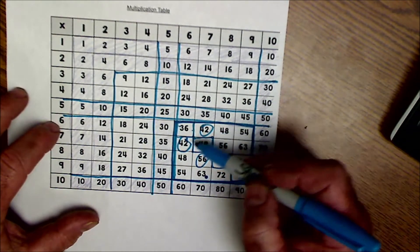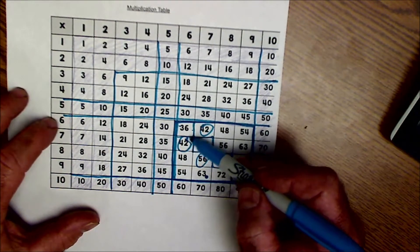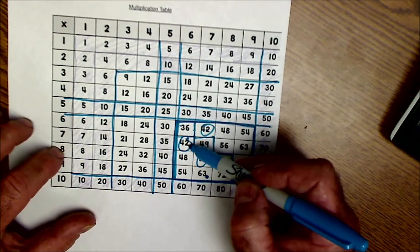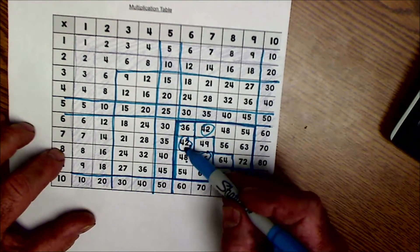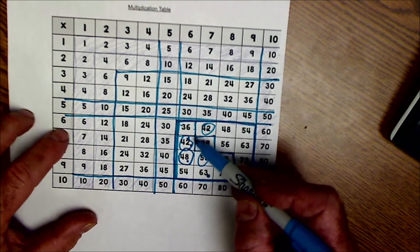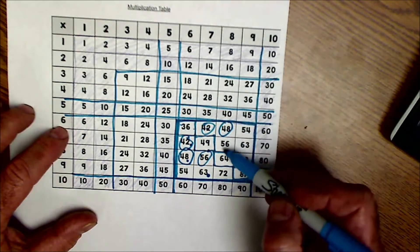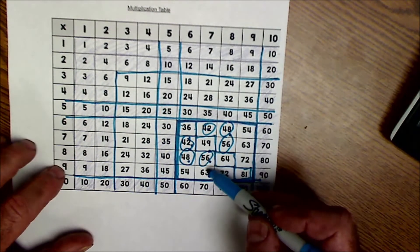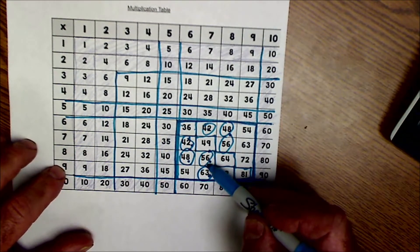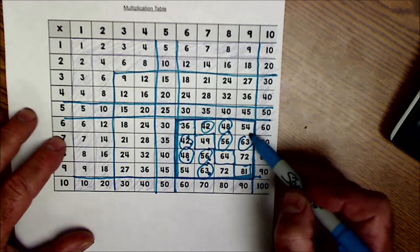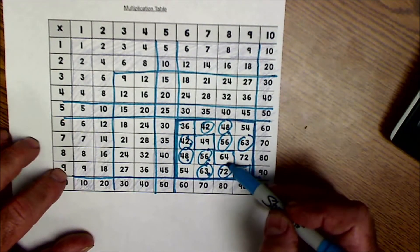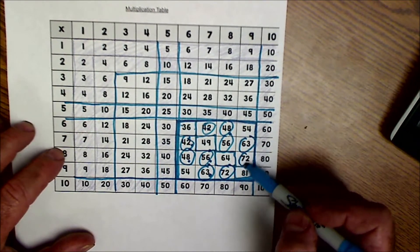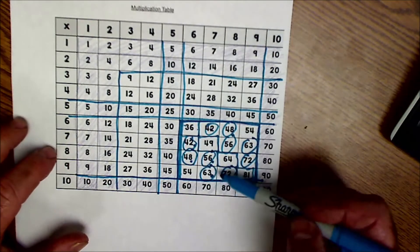Finishing up this column here, these are going to be the same, right? 6 times 7 and 6 times 7. 8 times 6, 6 times 8. 8 times 7, 7 times 8. 9 times 7, 7 times 9. 9 times 8, 8 times 9.